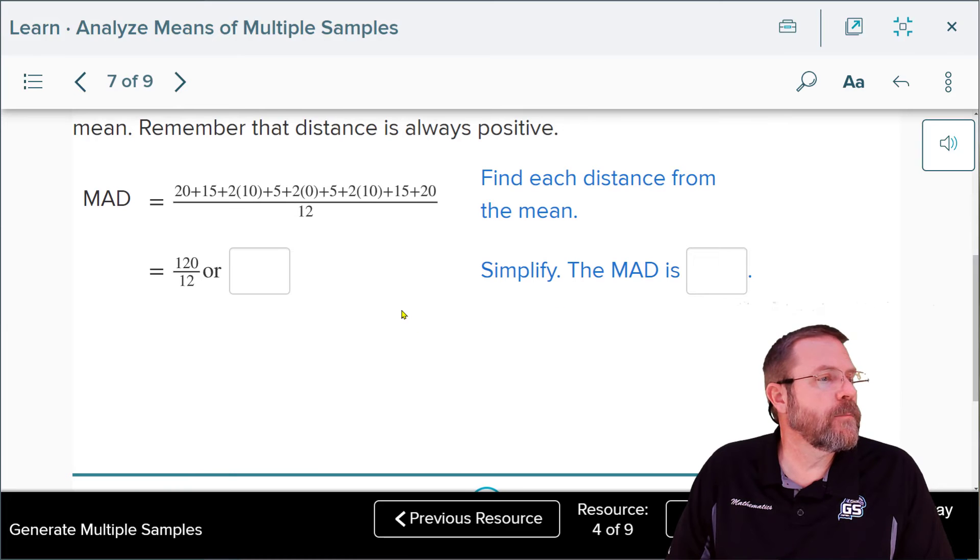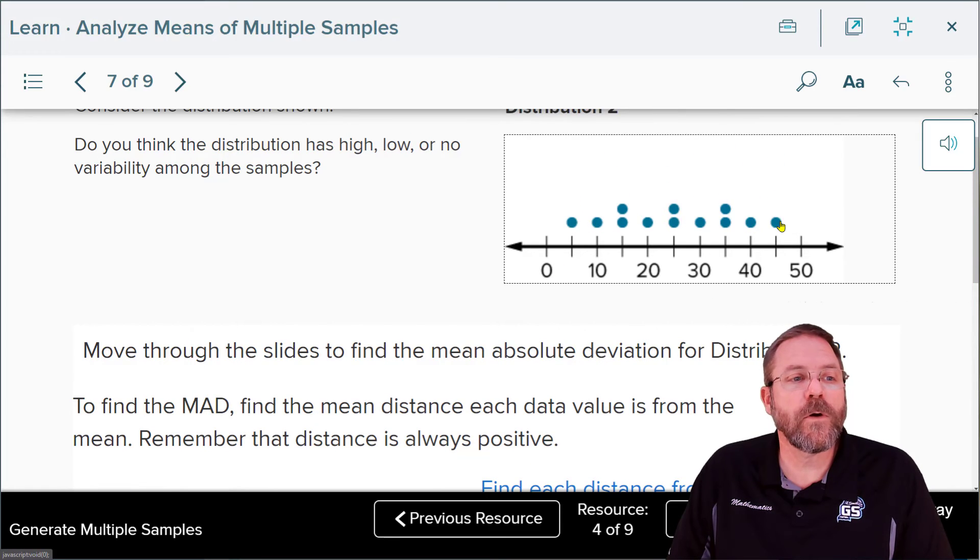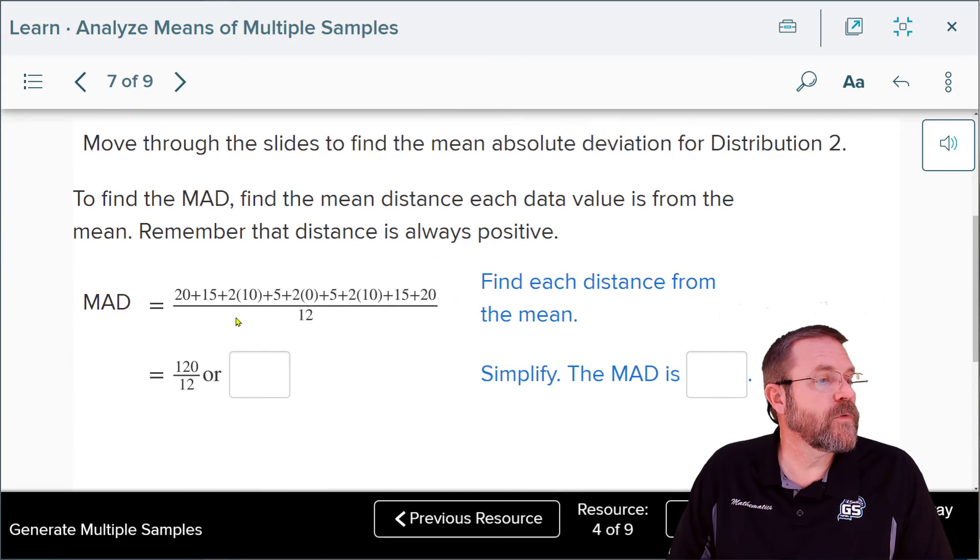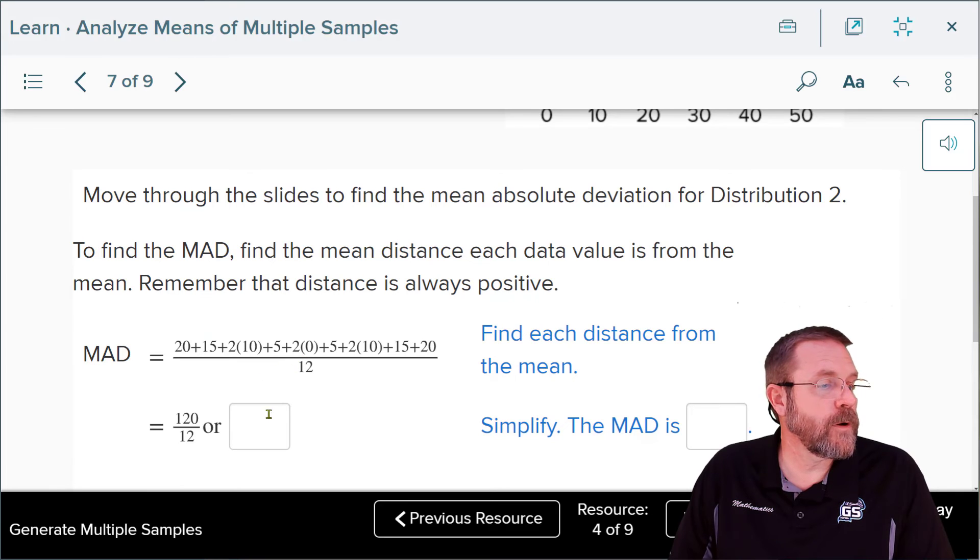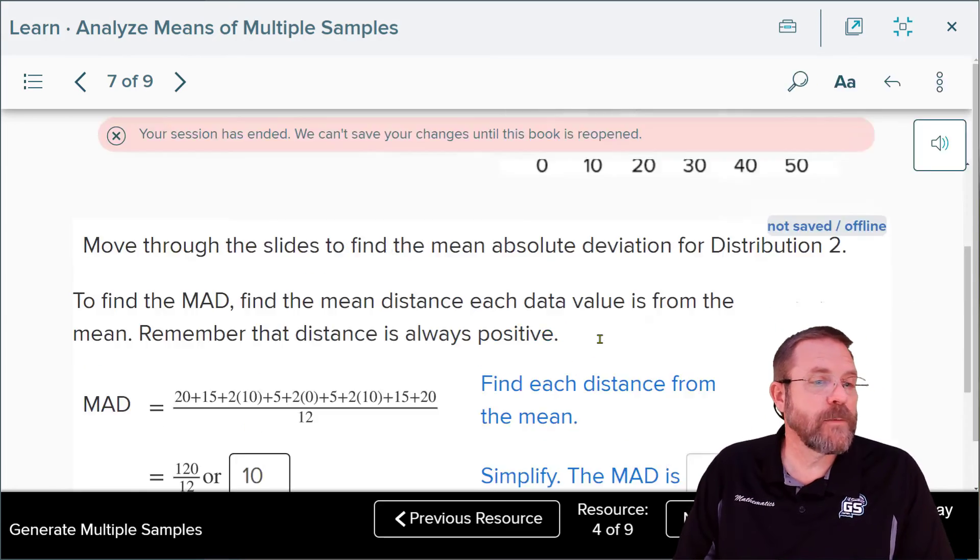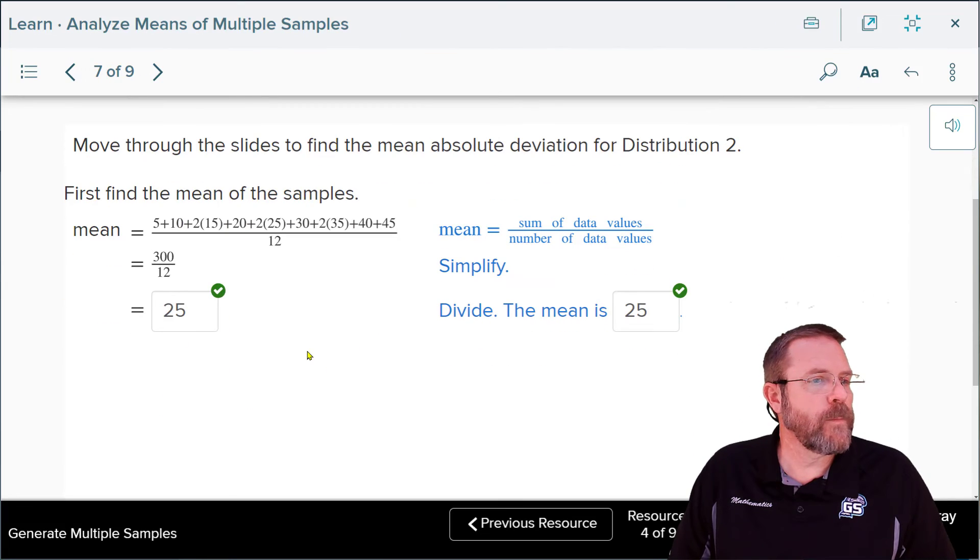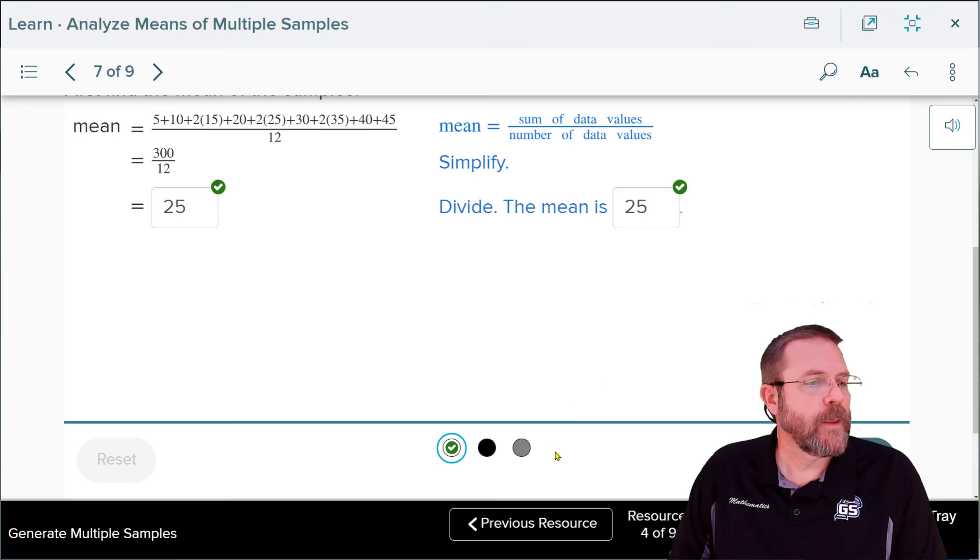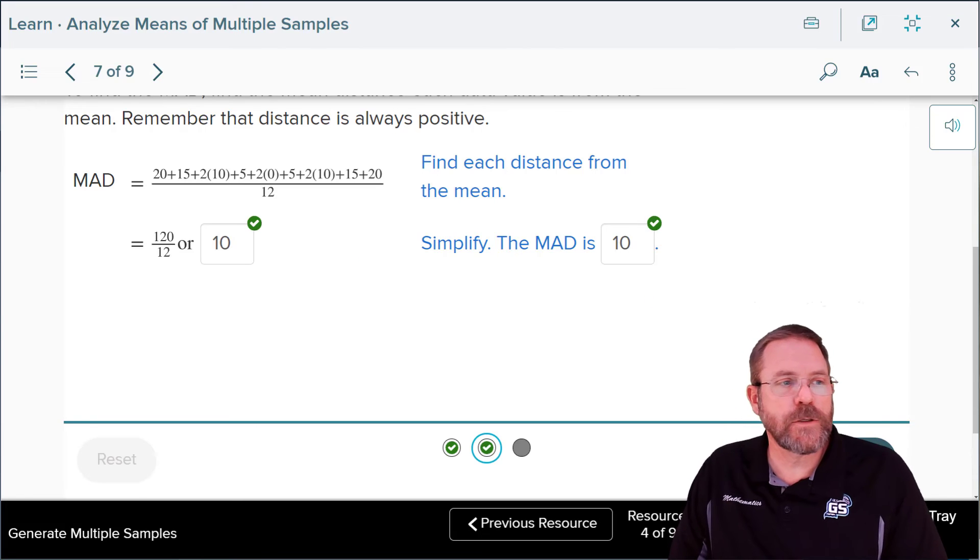Next, if you wanted to find the mean absolute deviation, that meant you would have to find out how far each of these data points are from this mean of 25. The textbook was kind enough and they did that for us here. The reason you have 2 times 10 is because you had 2 data points that were 10 spaces away. You have 2 data points that were 0 spaces away, and over here you had 2 more data points that were 10 spaces away. That's the reason for the 2 times in there. And when you divide 120 by 12, that ends up giving you 10. So the mean we found was 25. The mean absolute deviation, 120 divided by 12 is 10, and that means your mean absolute deviation is also 10.